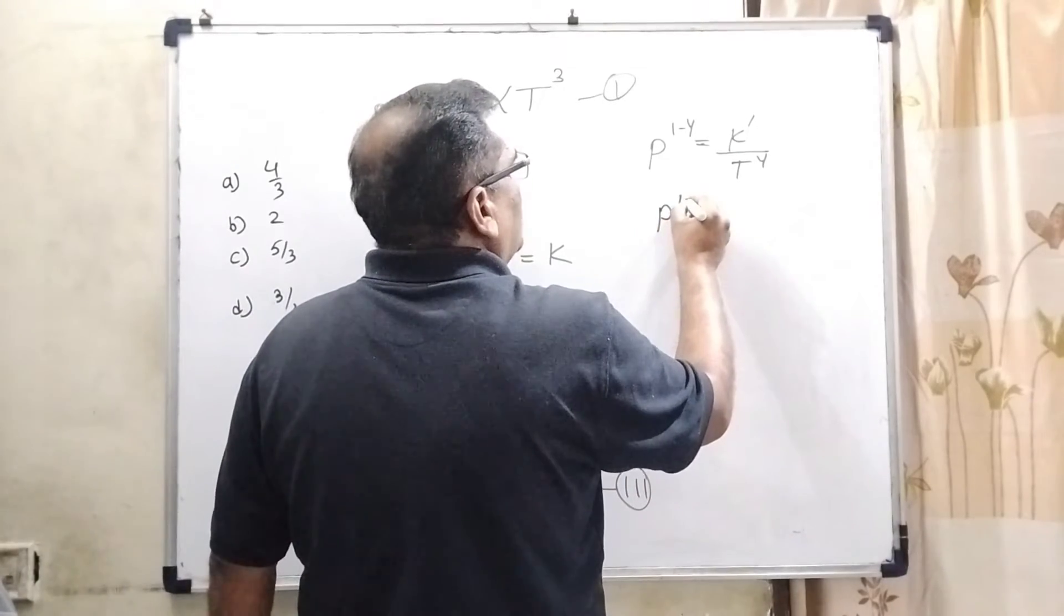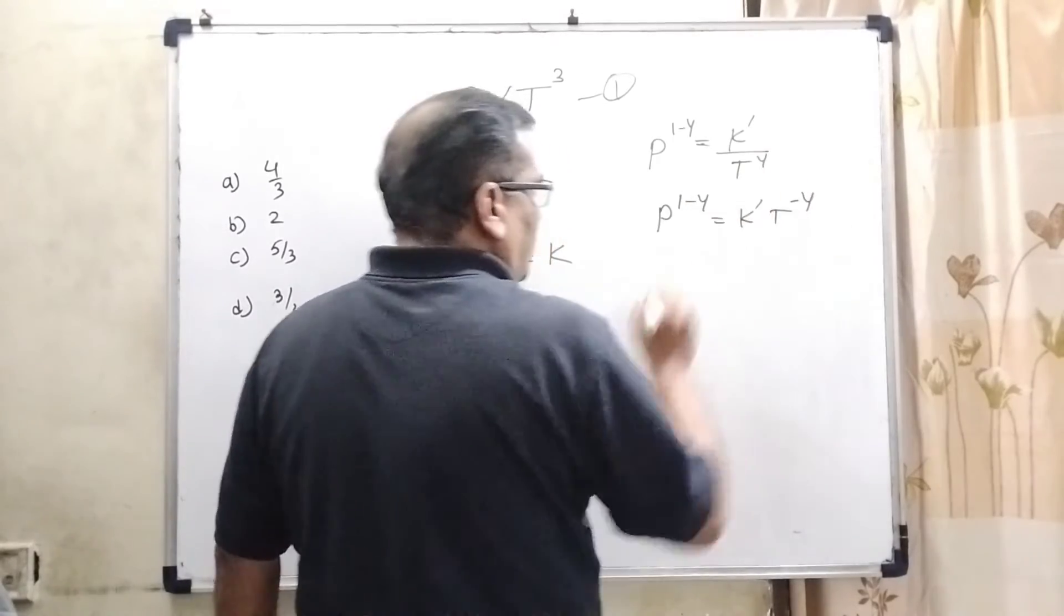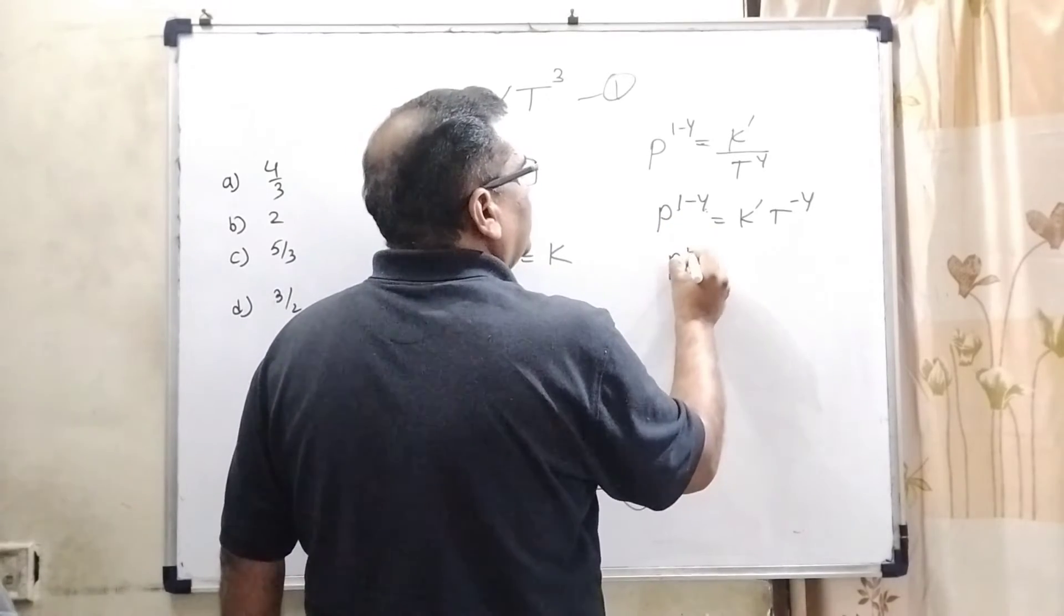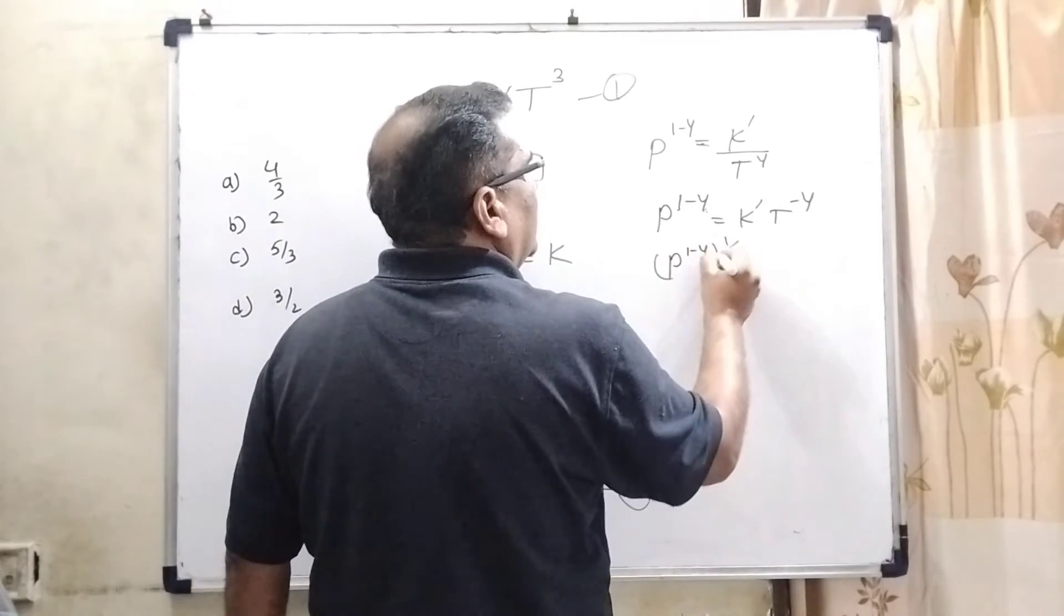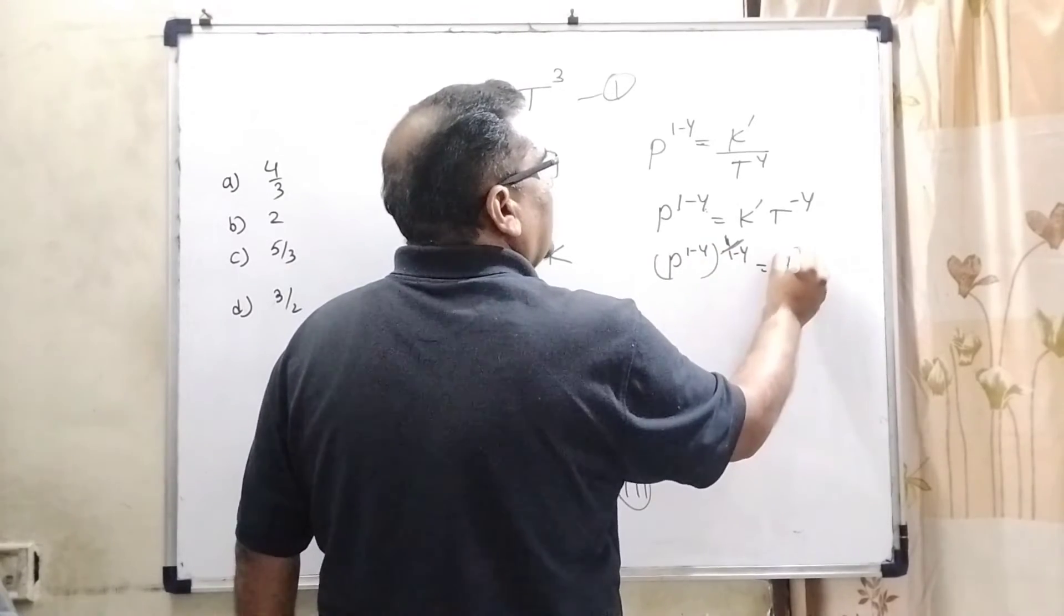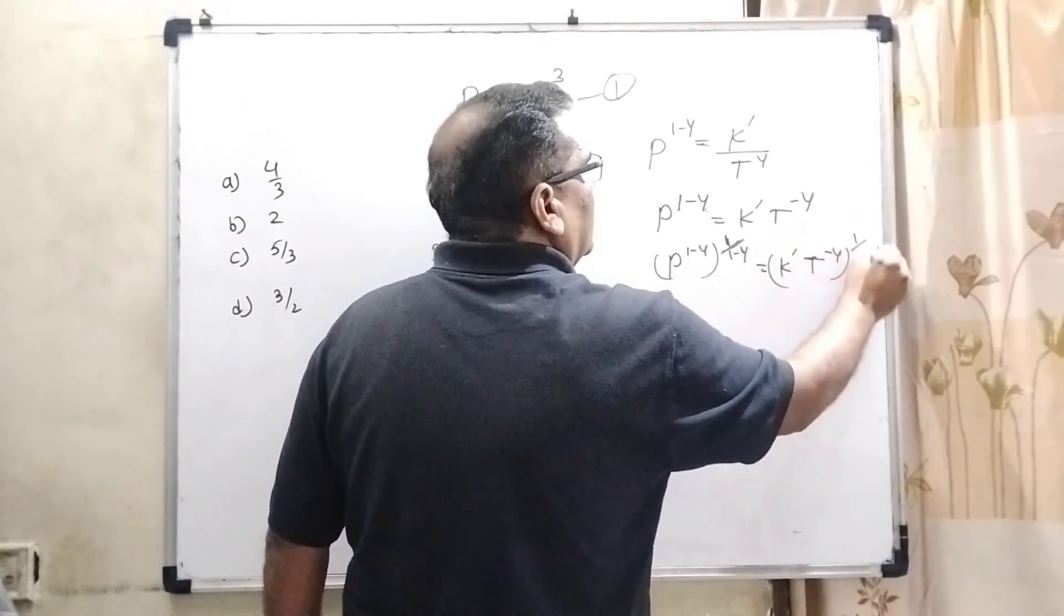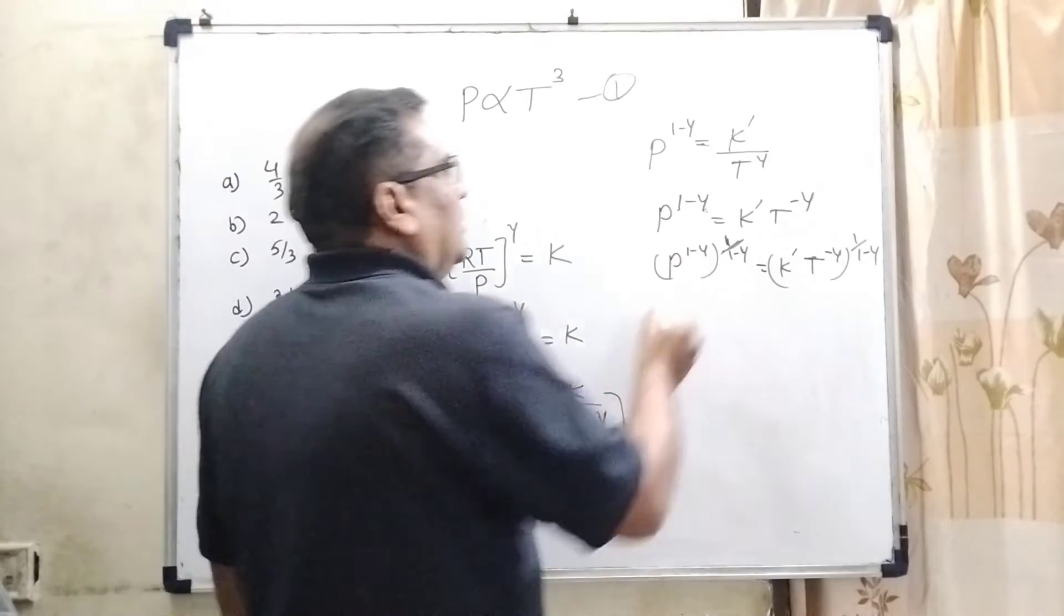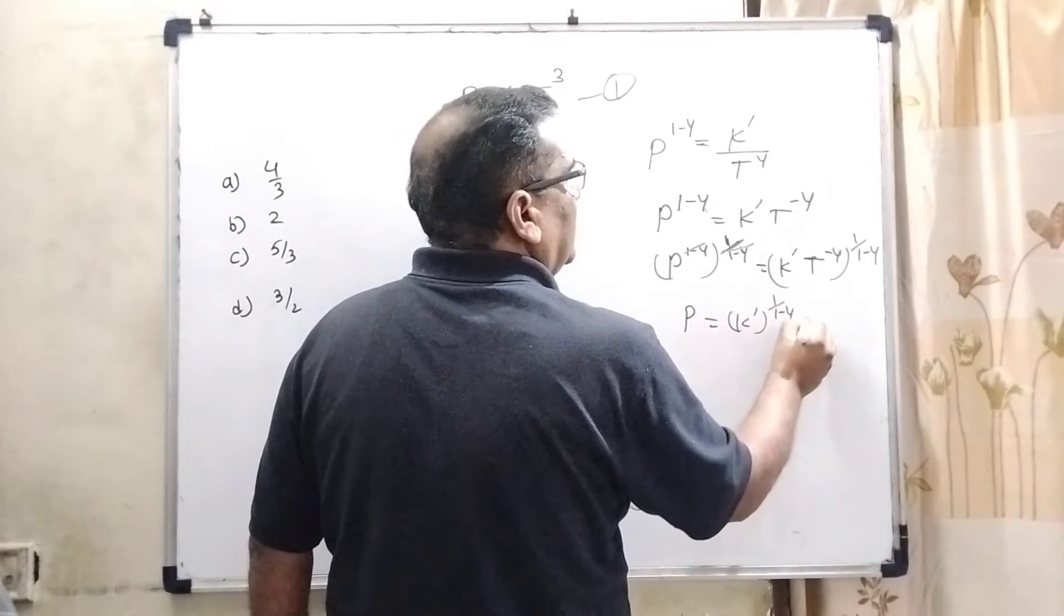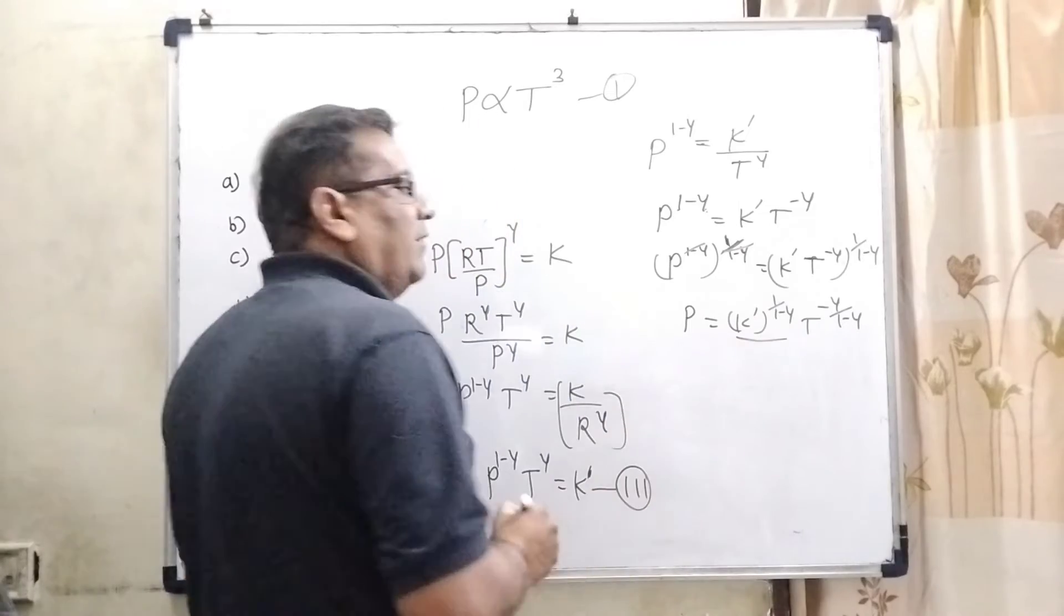Now, if you want to remove this 1 minus gamma, then we are using exponent law, both the side, 1 upon 1 minus gamma. These values cancel out. K dash raised to power 1 upon 1 minus gamma, T raised to power minus gamma upon 1 minus gamma.